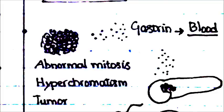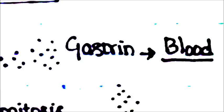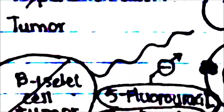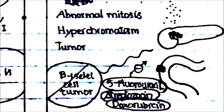Gastrinoma is a tumor that produces gastrin. It can be in the pancreas or in the duodenal wall, but if in the pancreas, they are non-beta islet cell tumors. All pancreatic cells except beta islet cells can cause a gastrinoma.